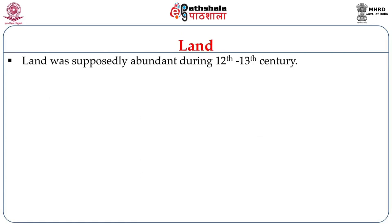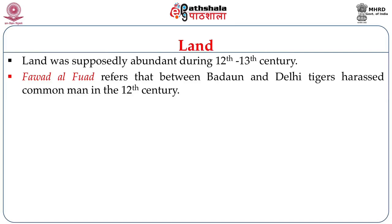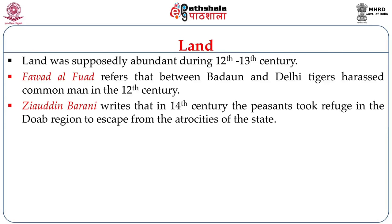Land was supposedly abundant in the 12th and 13th century. The Ganga-Yamuna Doab was still not fully cleared during this time, so extensive land of this area was being exposed. Fawaid al-Fuad refers that between Badaon and Delhi, tigers could harass common men in the 12th century. Later, in the 14th century, sources say these areas were extensively under cultivation, and Ziauddin Barani notes that peasants could even take refuge in the Doab region to escape state atrocities.